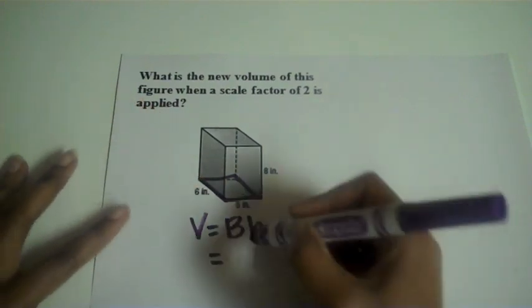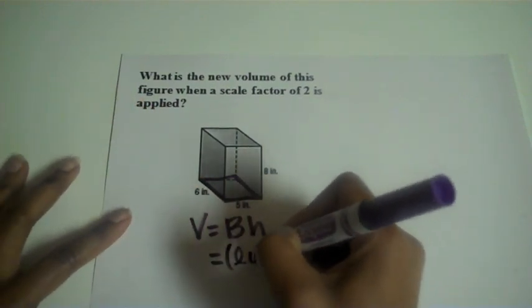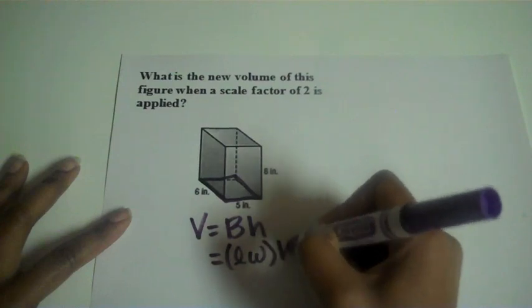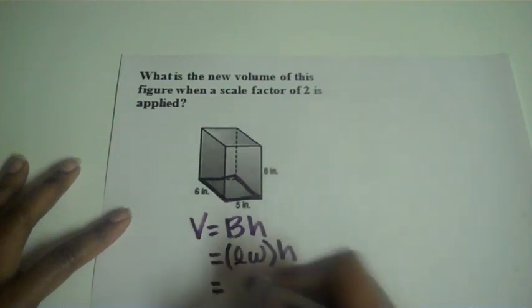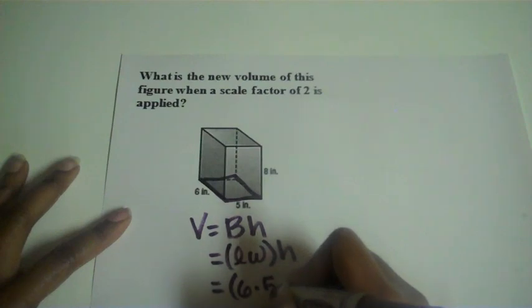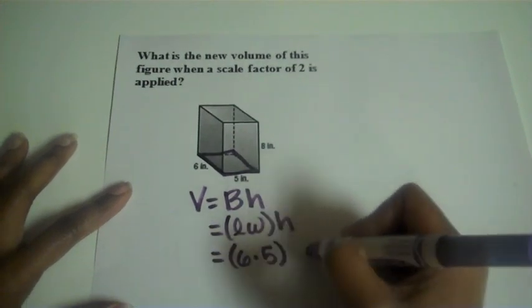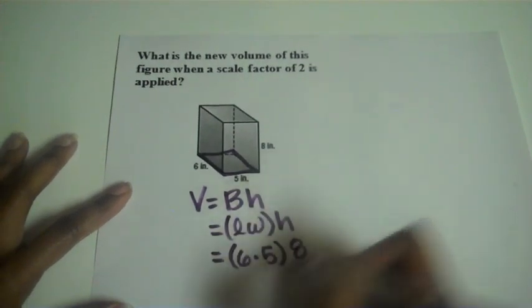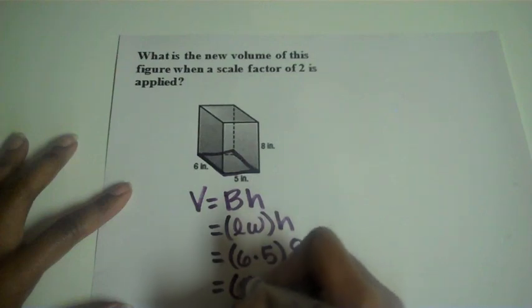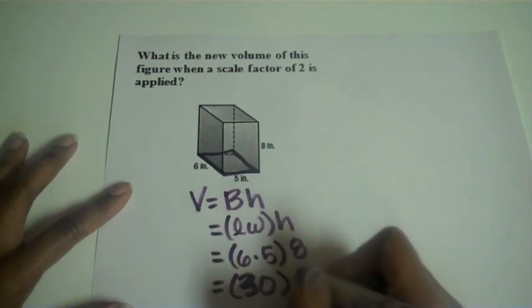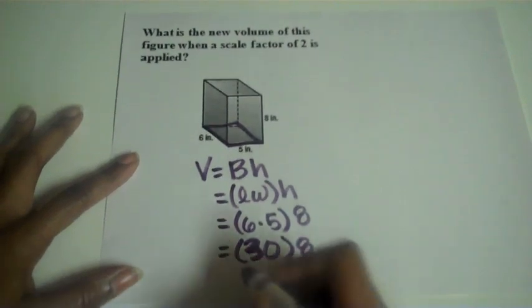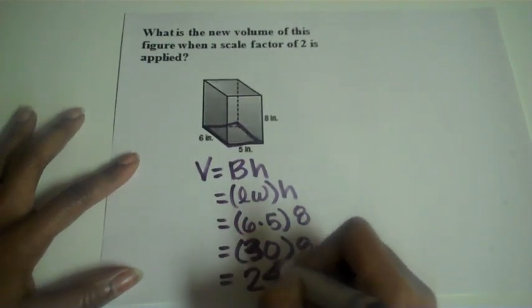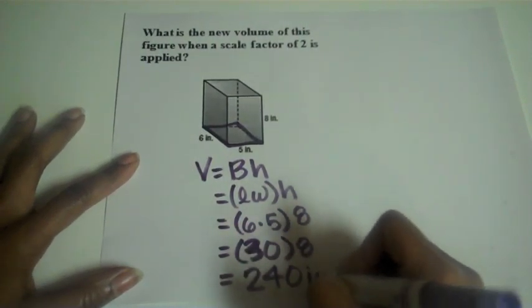Since my base is a rectangle, that means I'm doing length times width for the area of the base and then multiplying by the height of the prism. So I've got a length of 2 times a width of 5 and then a height of 8. 6 times 5 means the area of my base is 30 times 8 gives me a volume of 240 inches cubed.